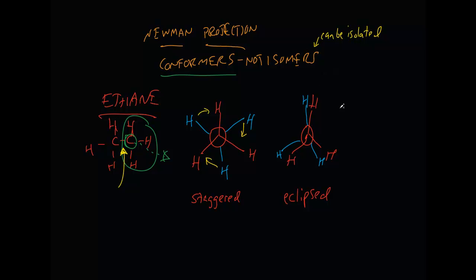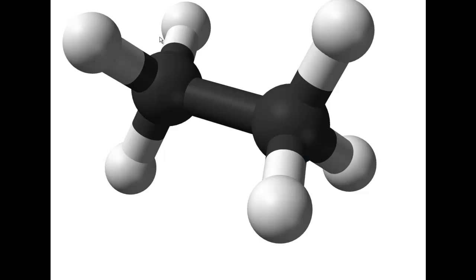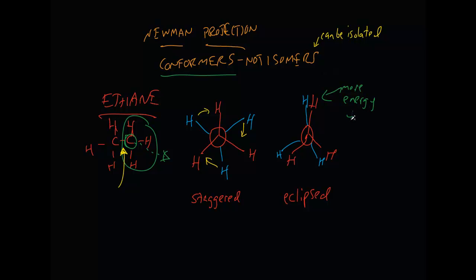Which conformation has more energy? Atoms like their space. The comparison I like to make is: if you go into a subway car on the weekend with plenty of seats, you're more relaxed and less tense. But during rush hour when it's crowded, you feel more tense because somebody's right up on you. Atoms are the same way — they don't like to be cramped. So the eclipsed conformation is going to have more energy because the hydrogen atoms are closer together, compared to the staggered conformation where they're farther apart.